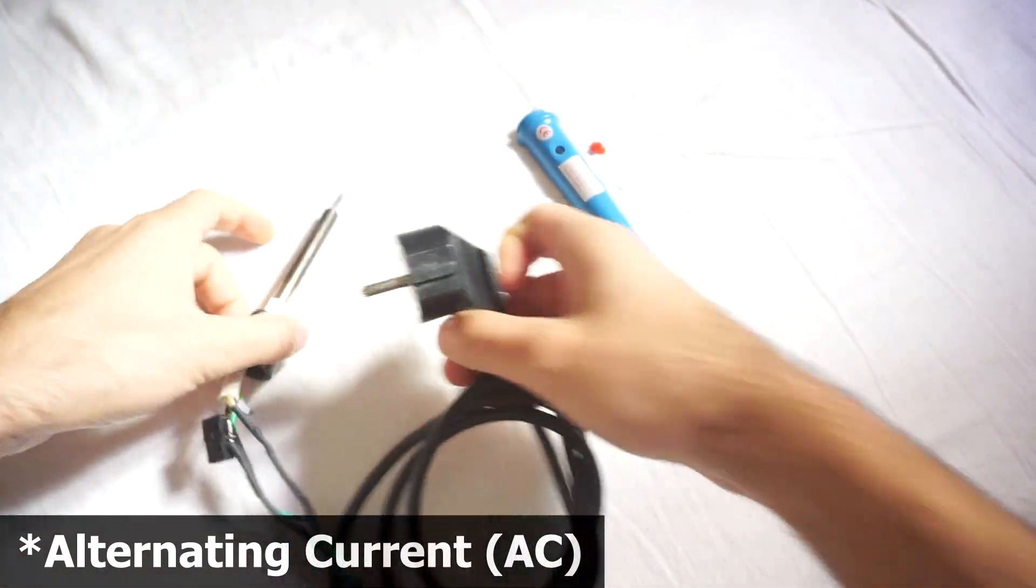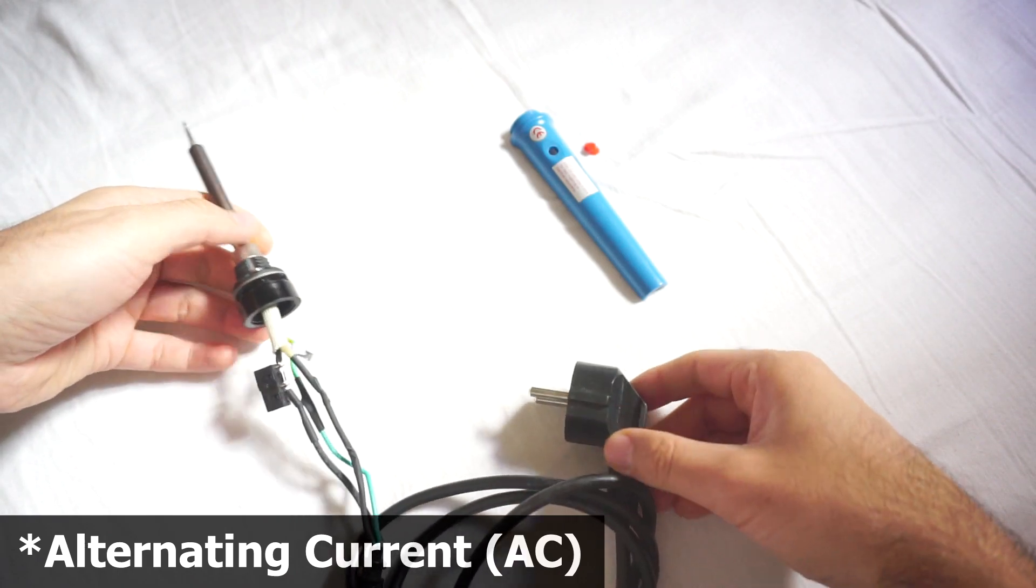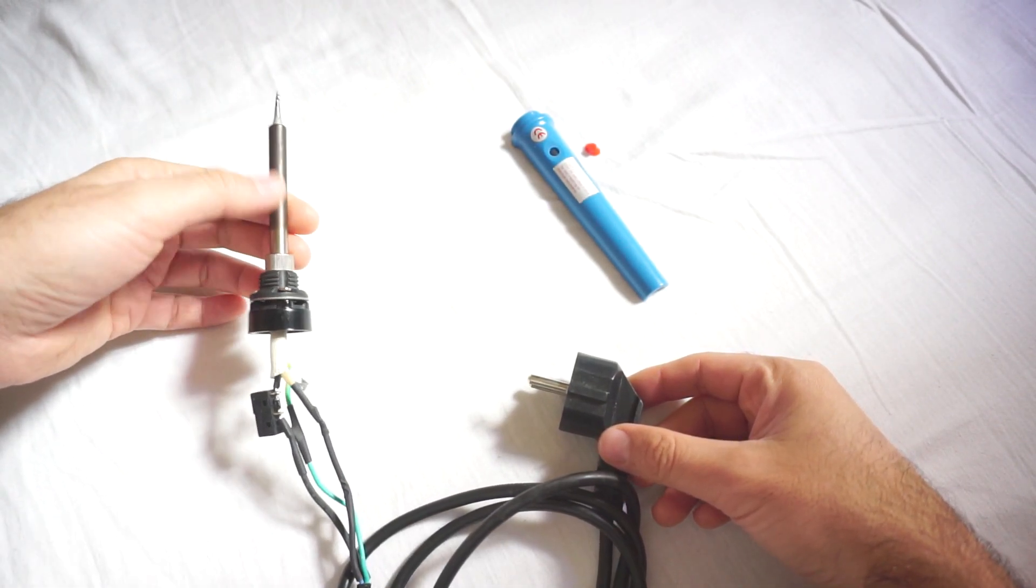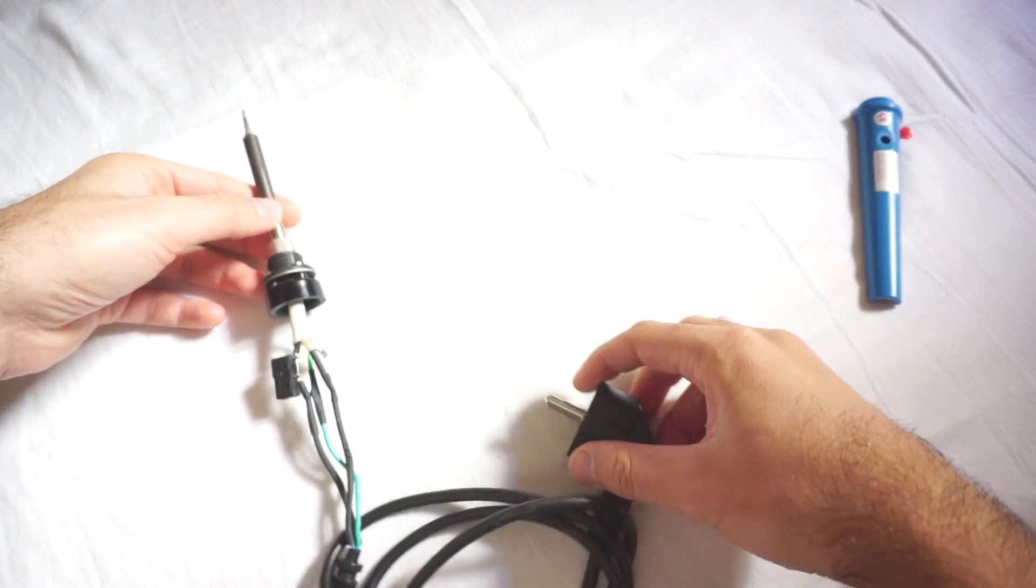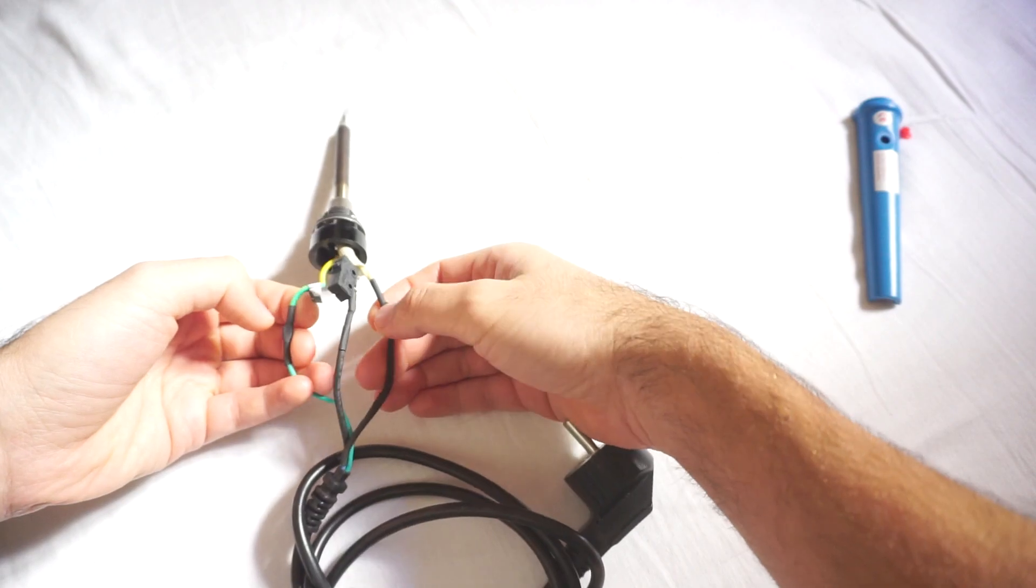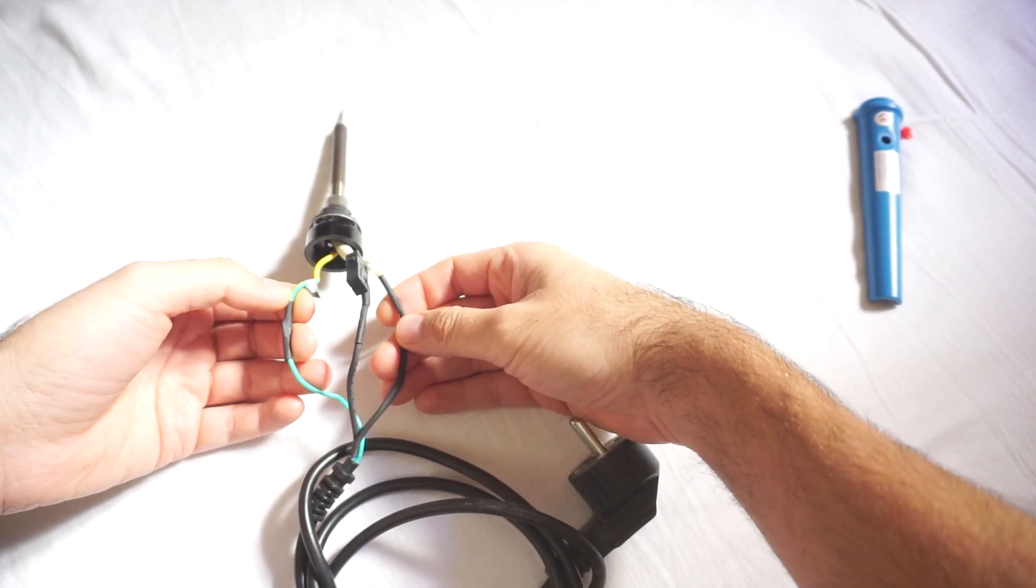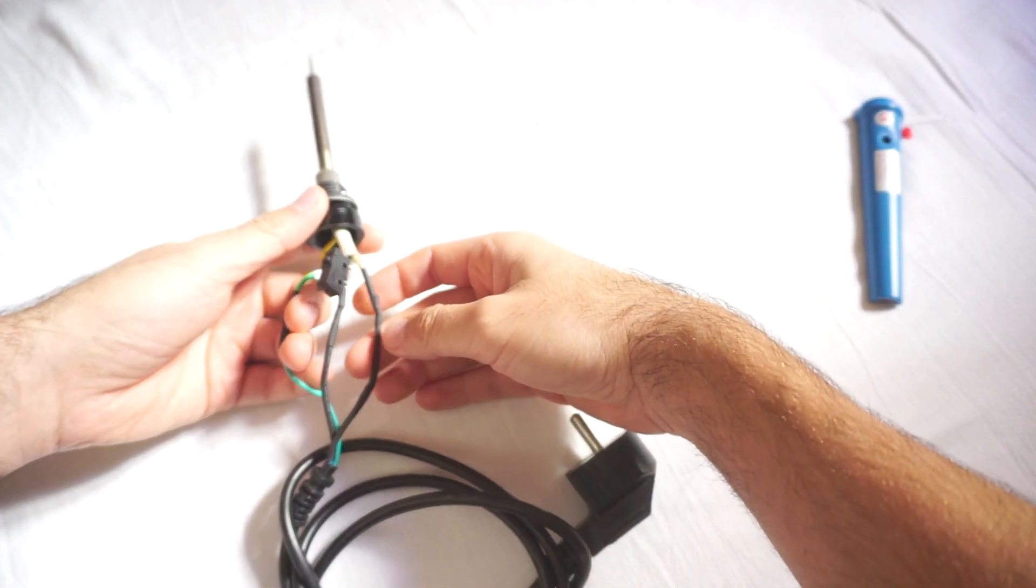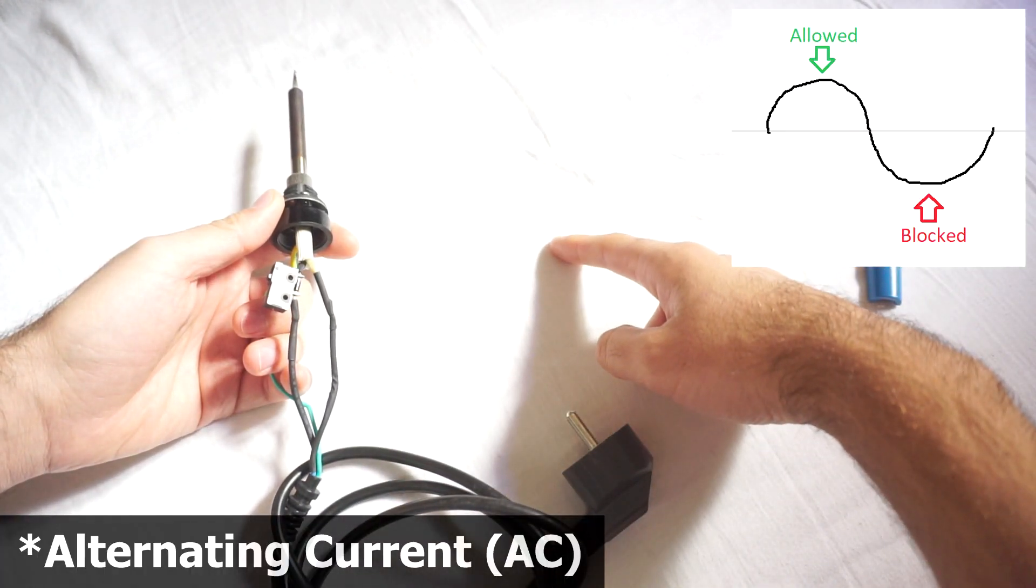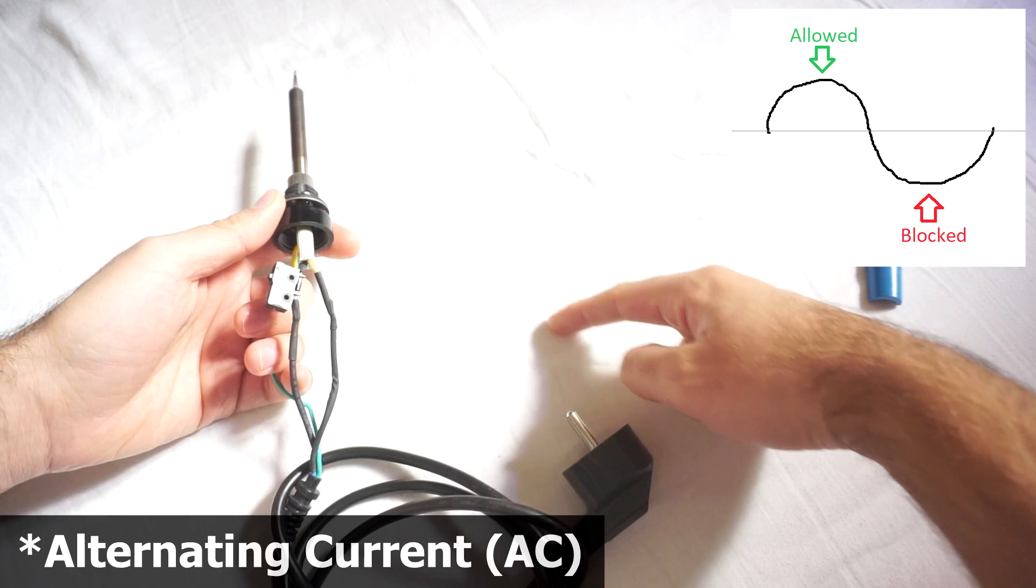When you plug it in, you're using alternating current to heat up this portion, but there's a problem. We have two wires here - the two black wires. The third one is only grounding, so we're not using that one. On these two wires, the alternating current can go in one direction but it cannot go in the other direction.